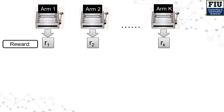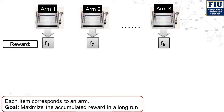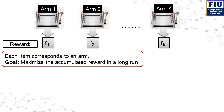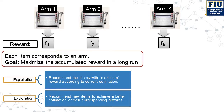In the multi-arm bandit problem, each arm corresponds to an item. The recommendation process works in a sequential model — every step, arms are selected to be pulled. Our goal is to maximize the accumulated reward in the long run. To achieve this, the optimal policy makes a good trade-off between exploration and exploitation.